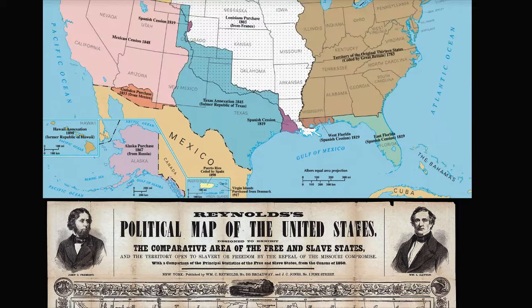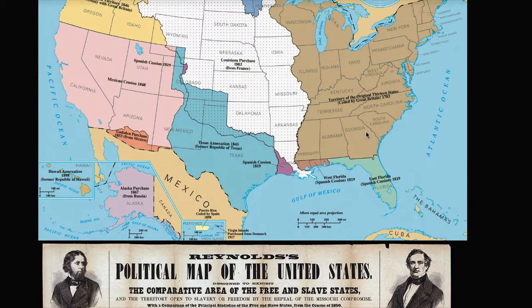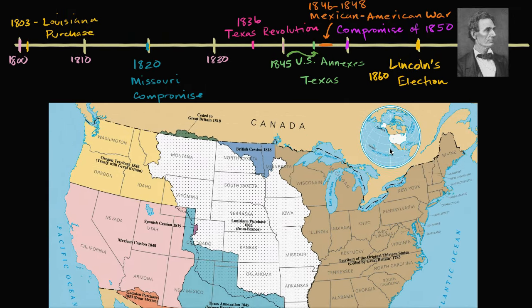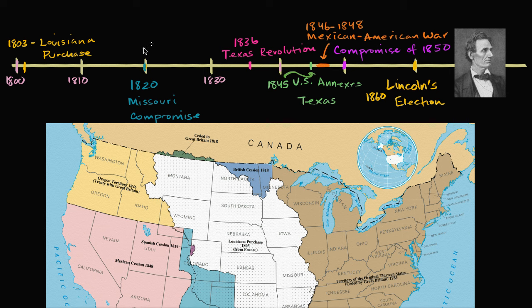So the issue is there from the moment the country is founded, and then we get into the 1800s, which is really the run-up. The Civil War doesn't start until 1861 or shortly thereafter. What's the big picture that really leads up to it?